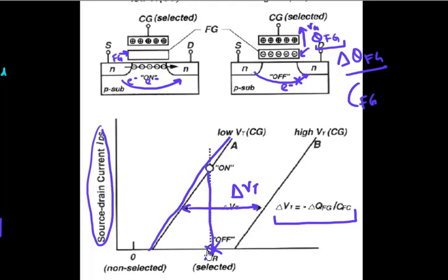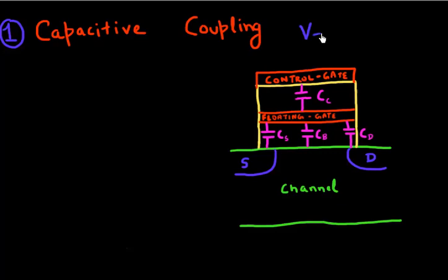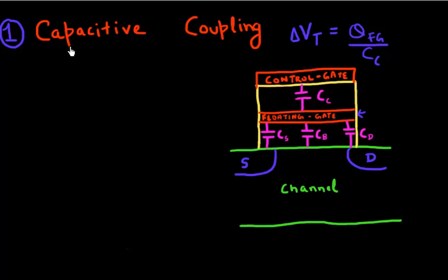You won't be able to read any current at that particular voltage, and you can say the device is in a high Vt state. So the threshold voltage of the transistor is affected by the amount of charge stored in the floating gate by this simple governing equation. To understand the program and erase behavior of this floating gate device, it's very important to understand two things: capacitive coupling and the tunneling phenomenon.